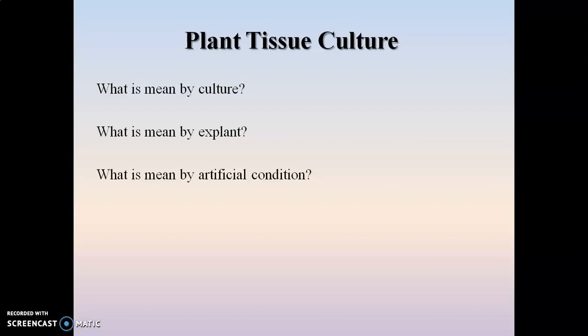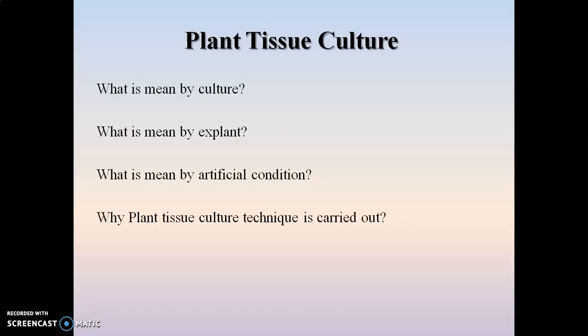These artificial conditions should be maintained as per the requirement of that particular plant for its proper growth and multiplication. Plant tissue culture is responsible for improving the quality of the plant, increasing yield, developing desirable characteristics, and also for obtaining primary and secondary metabolites from the plant.